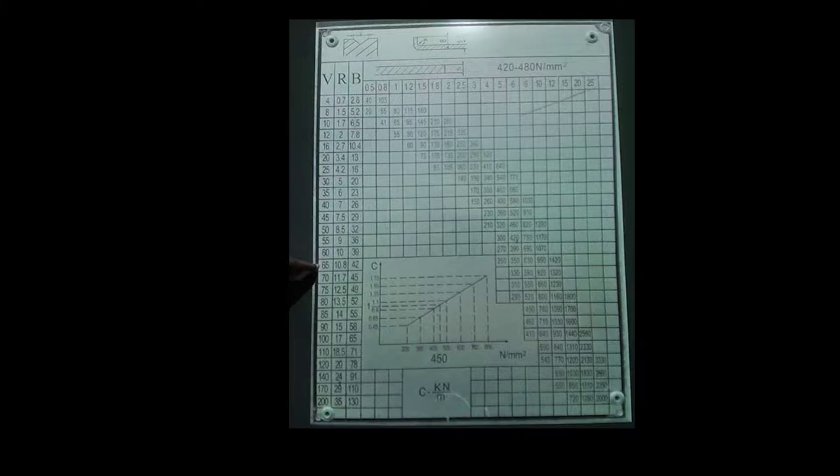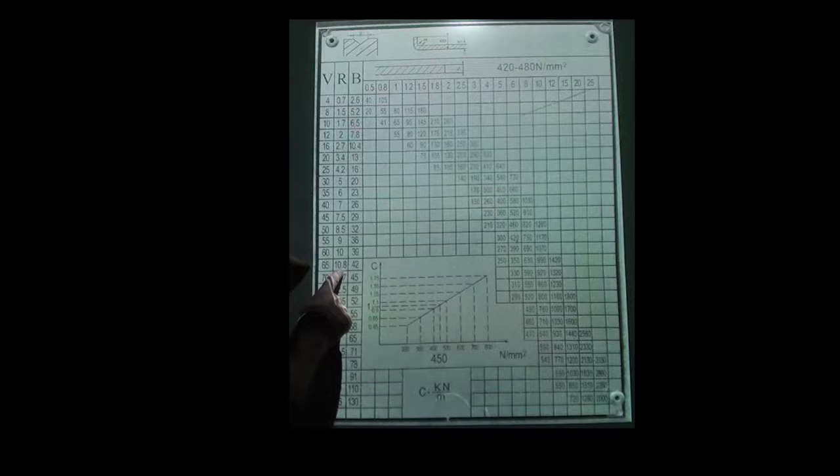And if we come across, the next column is for R, which is the radius. So if we come down the R column, we find that the radius for the 65mm V is 10.8mm. And that's the size radius that we will actually be using.